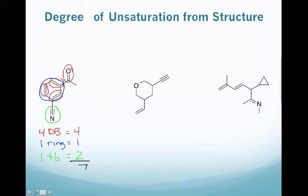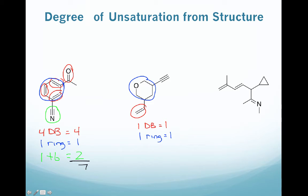For the next molecule: there's only 1 double bond, giving 1 unsaturation. We have 1 ring, giving 1 more unsaturation. And there is 1 triple bond, which counts for 2 unsaturations. Adding those up, this molecule has a total of 4 unsaturations.